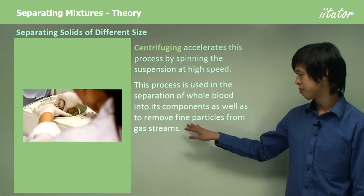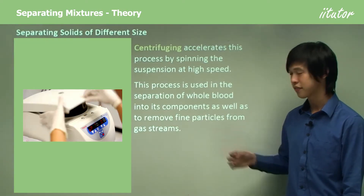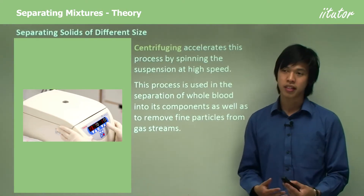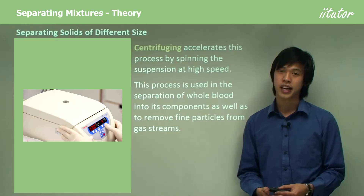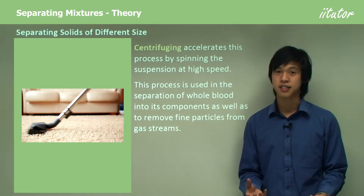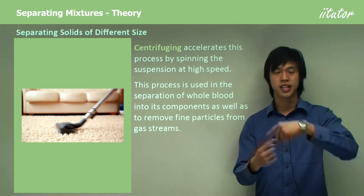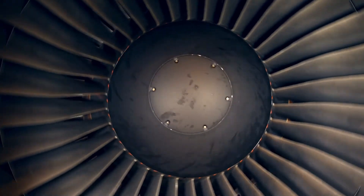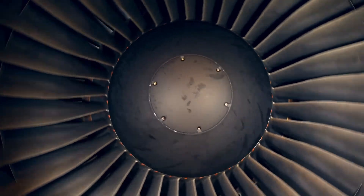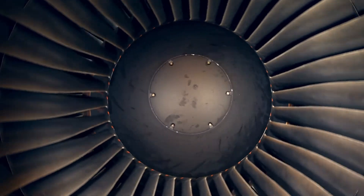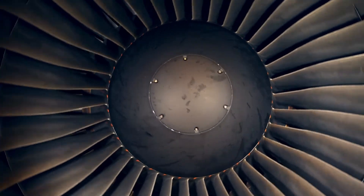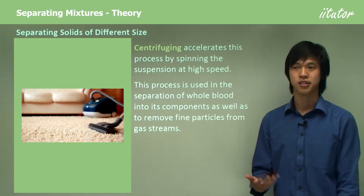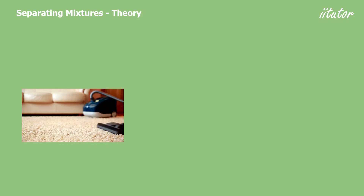Centrifuging is also used to remove fine particles from gas streams. A similar method is used in Dyson vacuum cleaners — the cyclonic action operates in the same way to extract dust.